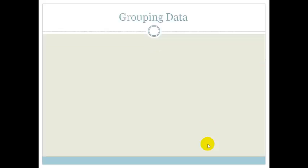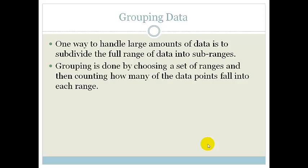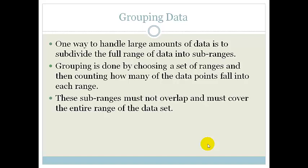Sometimes you may have huge amounts of data and the only way to handle these large amounts is to subdivide the full range of data into sub-ranges. What's important is that when you do this you need to choose a set of ranges and then count how many of the data points fall into each range. These sub-ranges must not overlap and must cover the entire range of the data set.